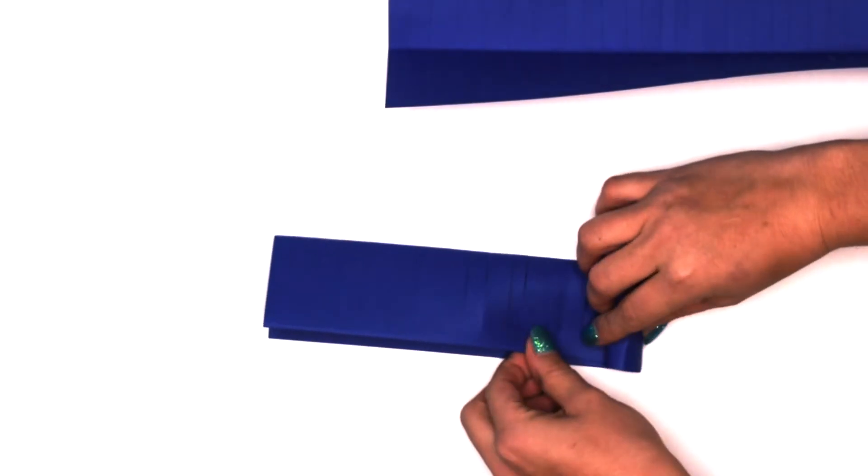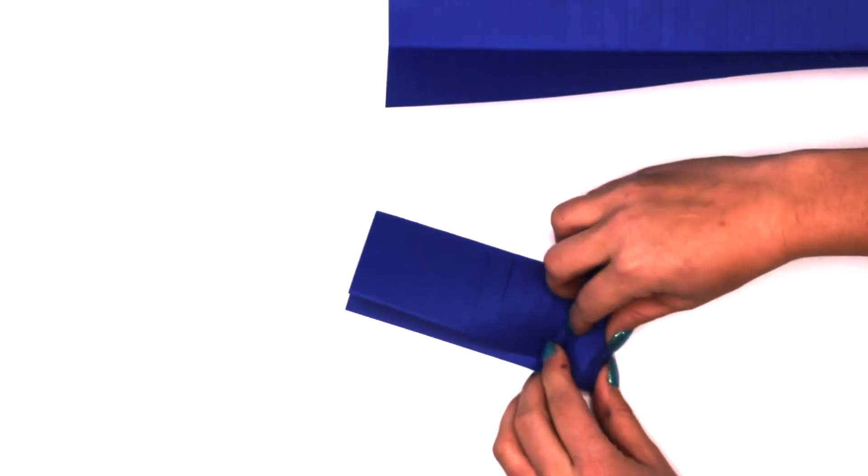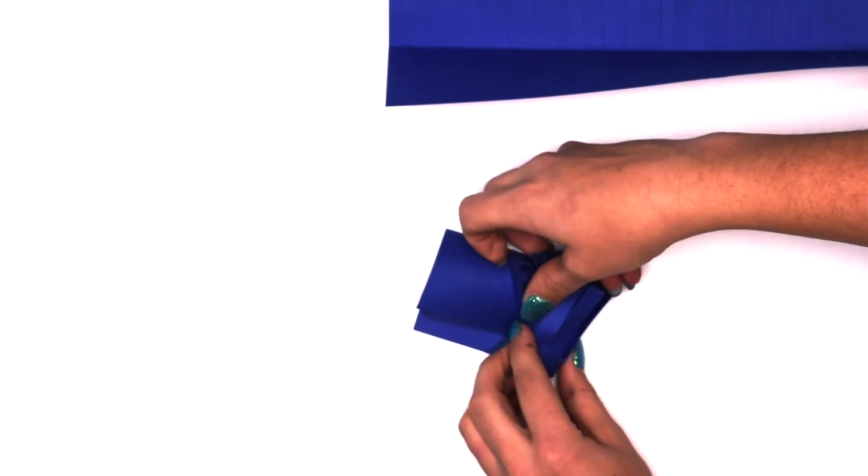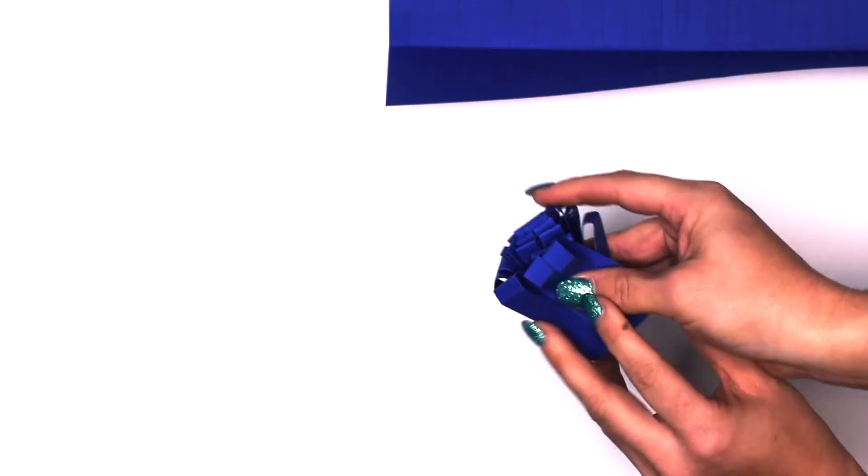Next you're going to start rolling your paper. You can add glue dots along the way if you need to secure it, but you're going to roll it all the way up and then for sure secure the end with some hot glue.